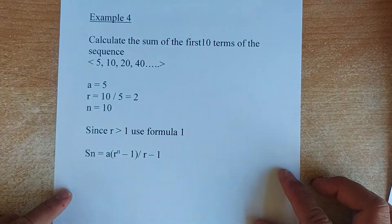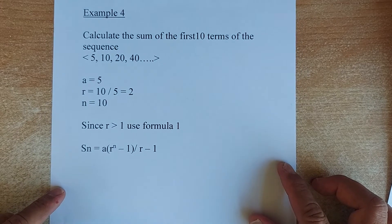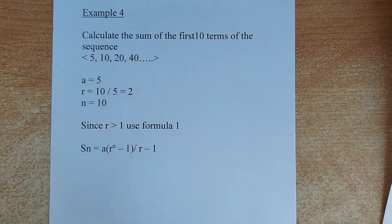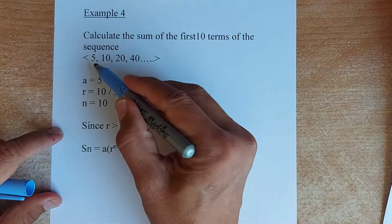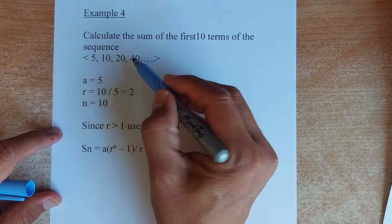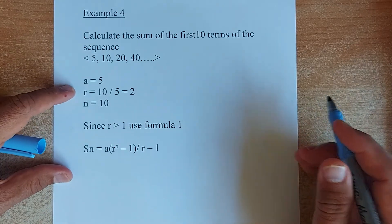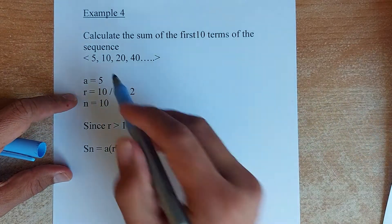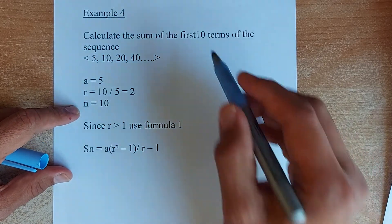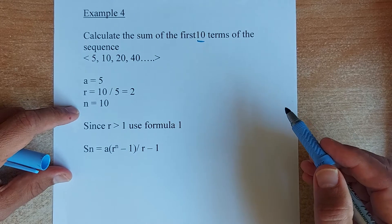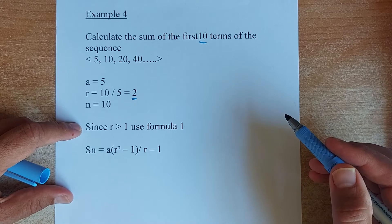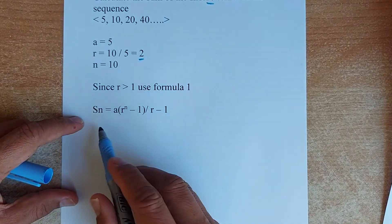Next example: calculate the sum of the first 10 terms of the sequence 5, 10, 20, 40. You can see it is always increasing by double — 5 times 2 is 10, 10 times 2 is 20, 20 times 2 is 40. So your first term A is 5. Your ratio R is 10 divided by 5, or 20 divided by 10, which is 2. Since they ask for 10 terms, N is 10. Your ratio is more than 1, so we use formula 1: SN equals A times (R to the power N minus 1) divided by (R minus 1).